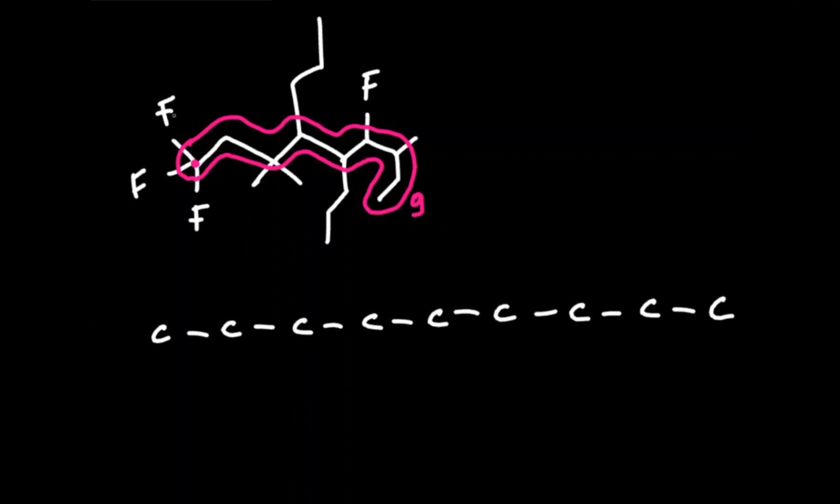On the first carbon, there are three fluorine atoms. Add them in the condensed formula.